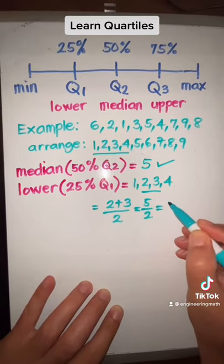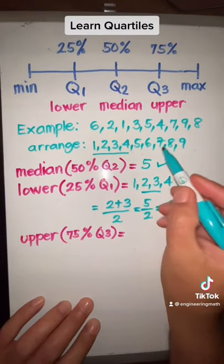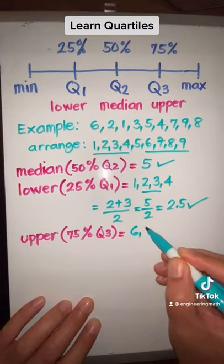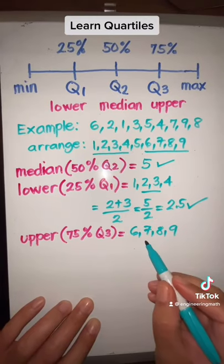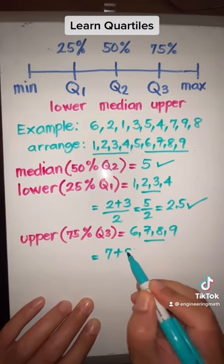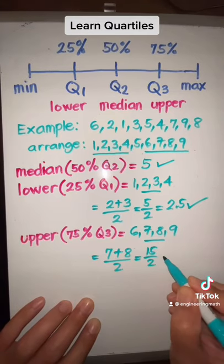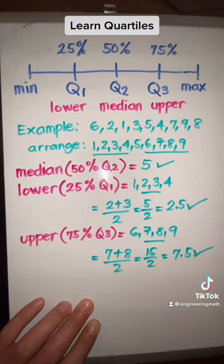That is 5 divided by 2, or 2.5. The upper, or 75% quartile, is the median of the upper half, which is 6, 7, 8, 9. The median is in between 7 and 8, so we take the average, and that is 15 divided by 2, or 7.5.